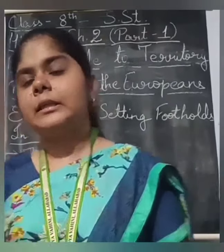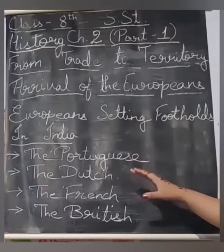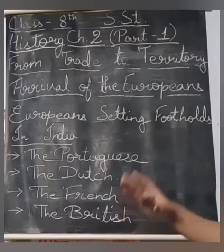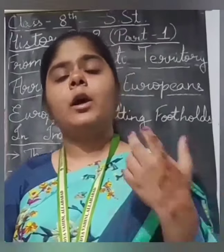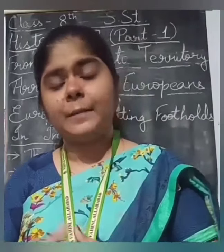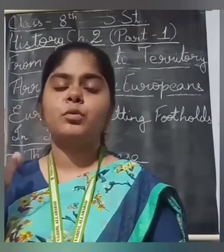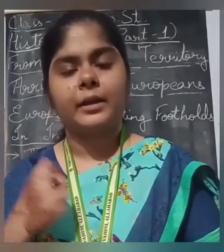The European countries came to India with trading companies. The four main countries that came for trading were the Portuguese, the Dutch, the French, and the British. Although there were other countries that came for smaller-scale trade for shorter periods, these were the main countries that came to trade with India and slowly also tried to make territories.